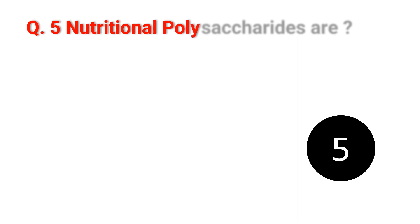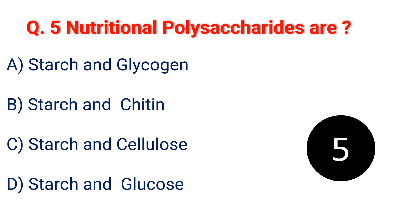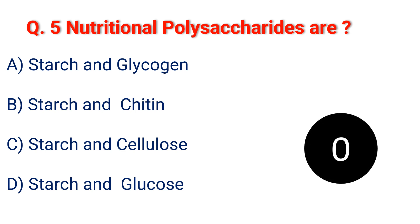Question 5. Nutritional polysaccharides are: A. Starch and glycogen. B. Starch and chitin. C. Starch and cellulose. D. Starch and glucose. The answer is A. Starch and glycogen.